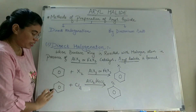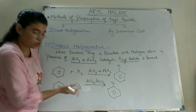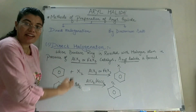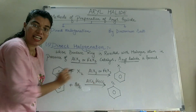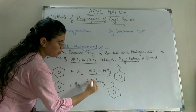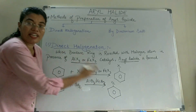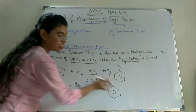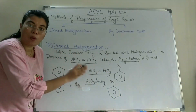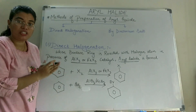Similarly, instead of Cl2 we can use Br2. I take a benzene ring and react it with Br2 in the presence of catalyst AlBr3 or FeBr3. When this reaction is carried out, bromine gets attached to the benzene ring and this becomes bromobenzene, which is also an Aryl Halide. So this was all about the direct halogenation method.